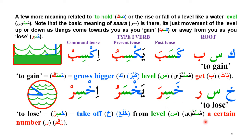'Hasira' means to lose. Ha can be thought of as taking a bite or a portion out of the Rakmun — the total number. Ra is always represented as a curved thing, and Seen is the level (Mustawa). You can imagine a whole thing, and from it you cut out a portion — that is 'Hasira.' 'Hala'a' means to take off from the level (Mustawa), a certain number (Rakmun) — Hasira.